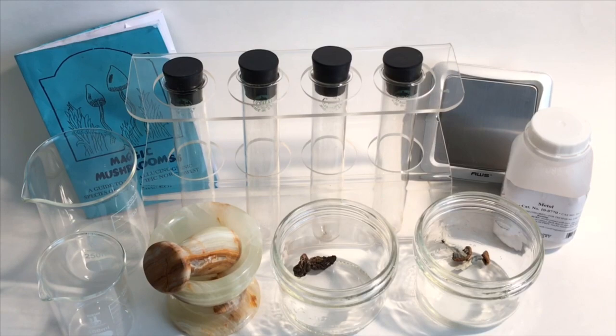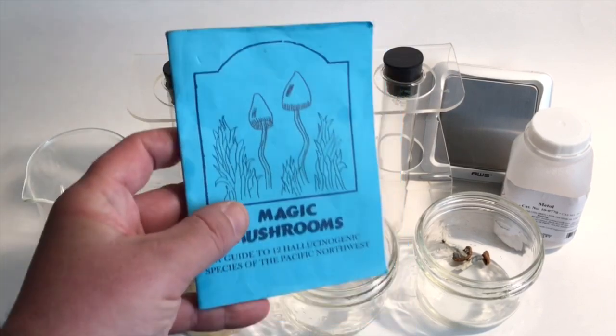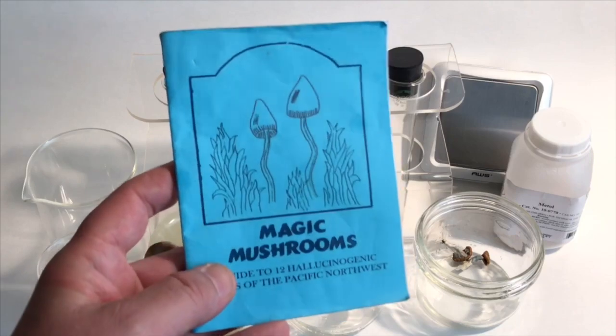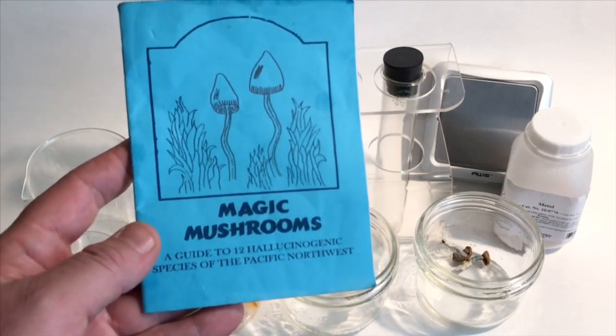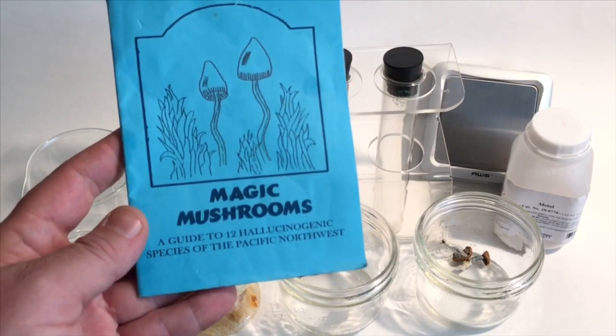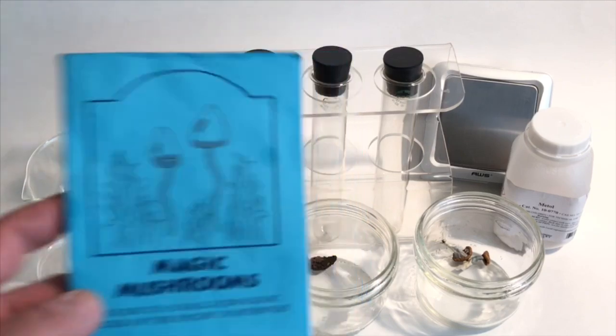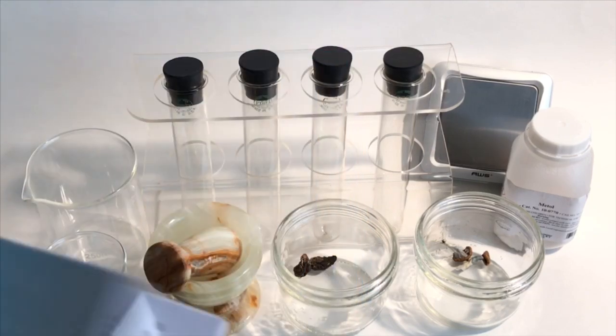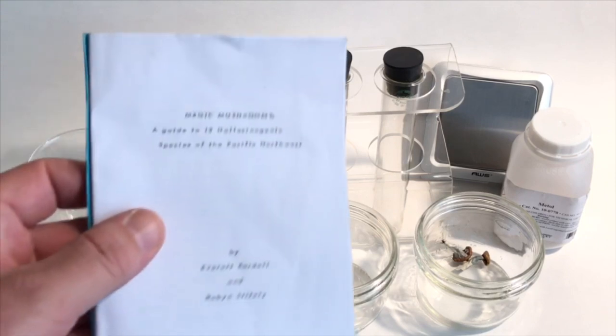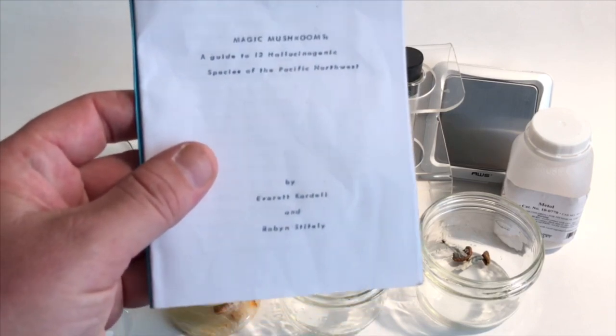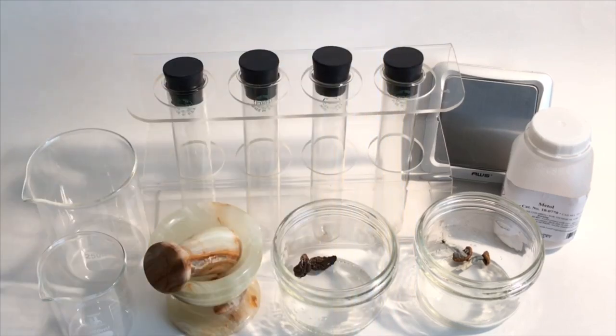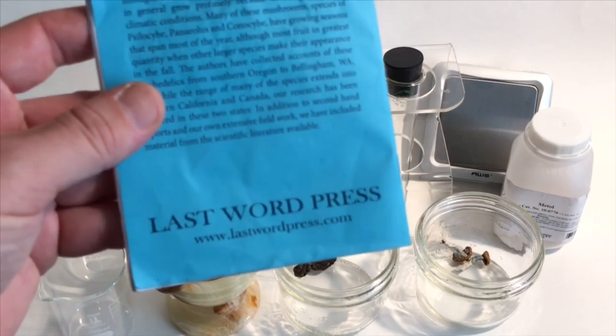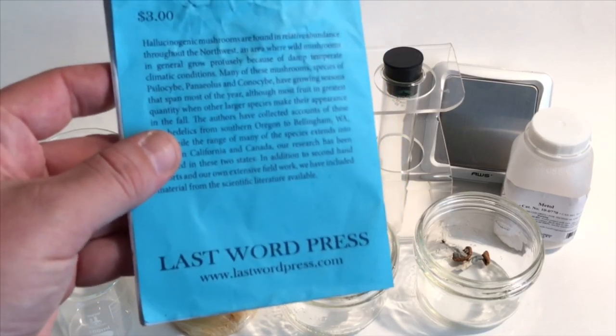So I bought this book. I found this on eBay for $5 with free shipping. It's a fantastic little book. Magic Mushrooms, a guide to 12 hallucinogenic species of the Pacific Northwest. This is written by Everett Cardell and Robin Stitely and I'll leave a link in the description where you can pick up your own copy. This is published by Last Word Press and they're out of Olympia, Washington.